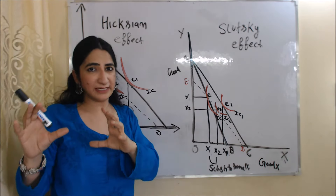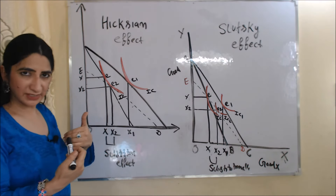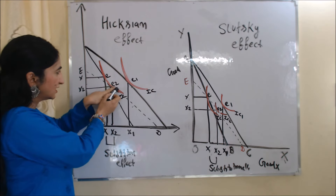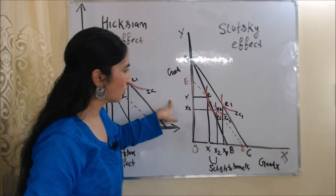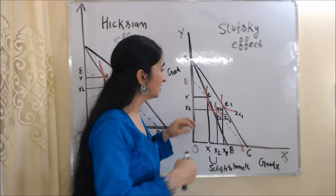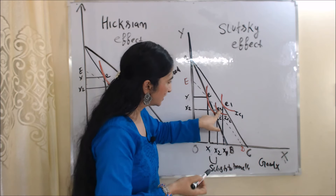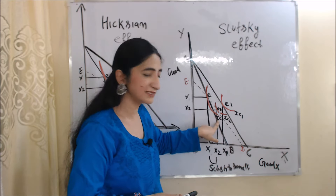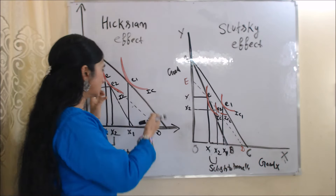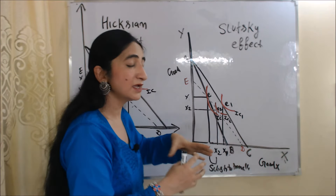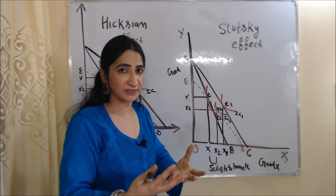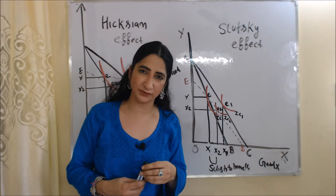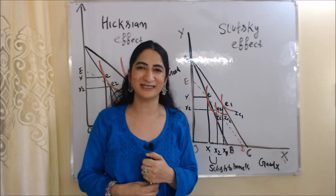The second difference is that in the case of Hicks, when we reduce money income, the consumer reaches the same indifference curve — you can see E and E2 are on the same indifference curve. But in the case of Slutsky, when we reduce money income of the consumer, the consumer reaches a higher indifference curve. You can see E2 is at IC2, which is higher than IC. So Hicks brings the consumer back to the same indifference curve, but in the Slutsky effect the consumer gets more satisfaction and reaches a higher indifference curve. This is all about Hicks and Slutsky substitution effect. Thank you so much for watching this video. Bye, take care.